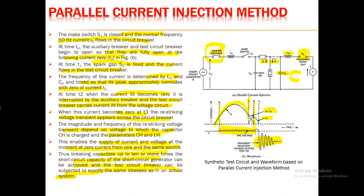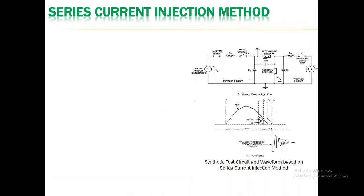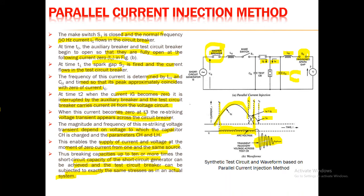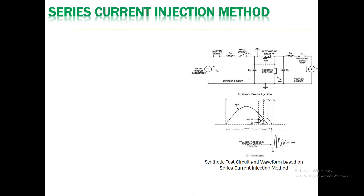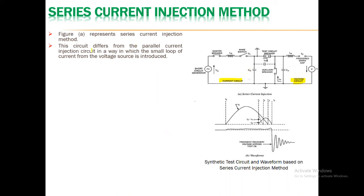The last method is the series current injection method. In the previous parallel case, the short circuit generator circuit and the high voltage circuit were connected in parallel. In the series current injection method, both circuits are connected in series — this is the current circuit and this is the voltage circuit, both connected in series.